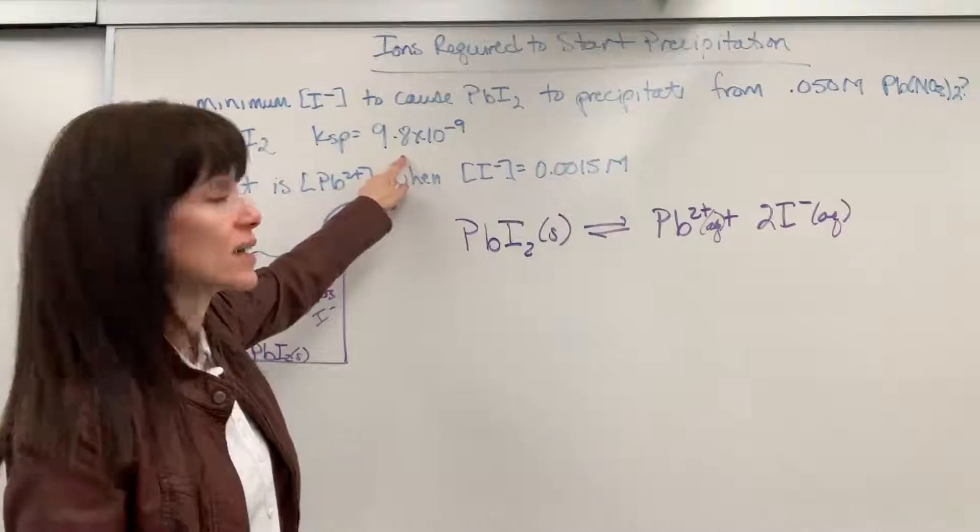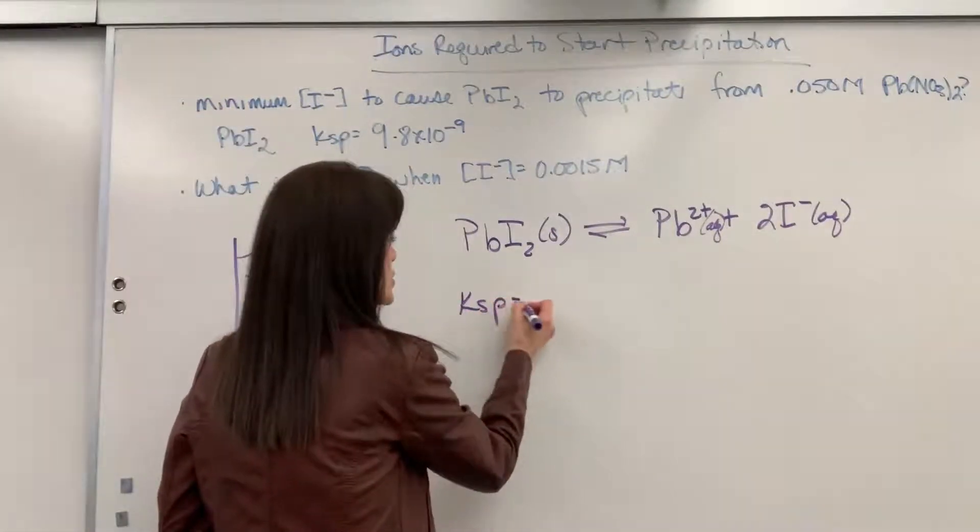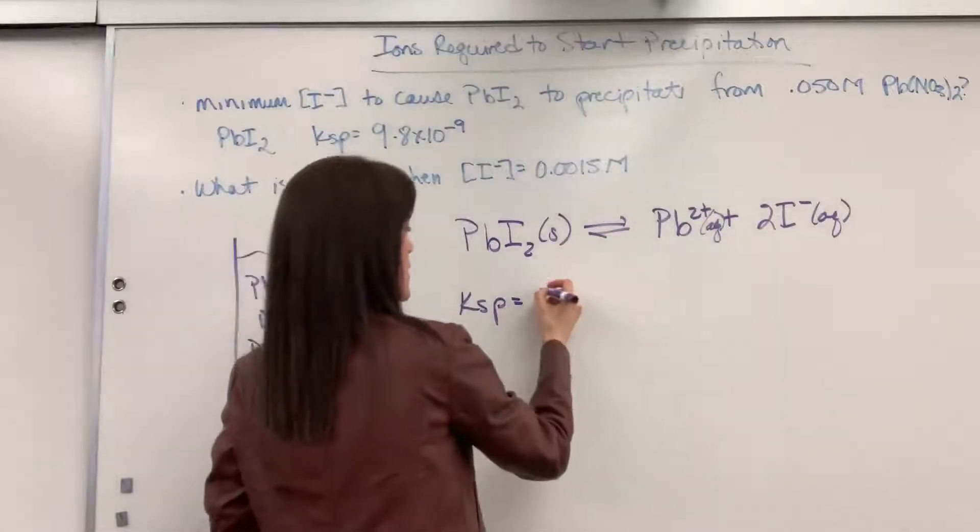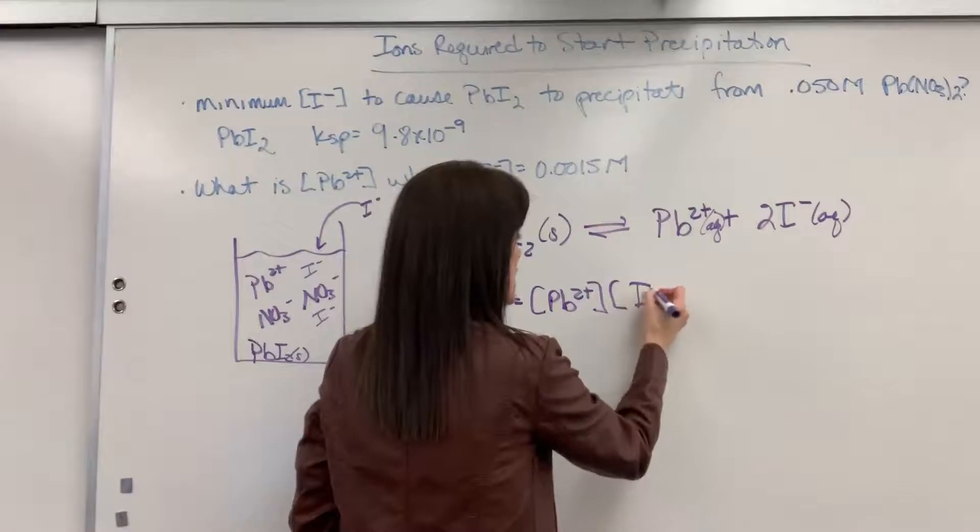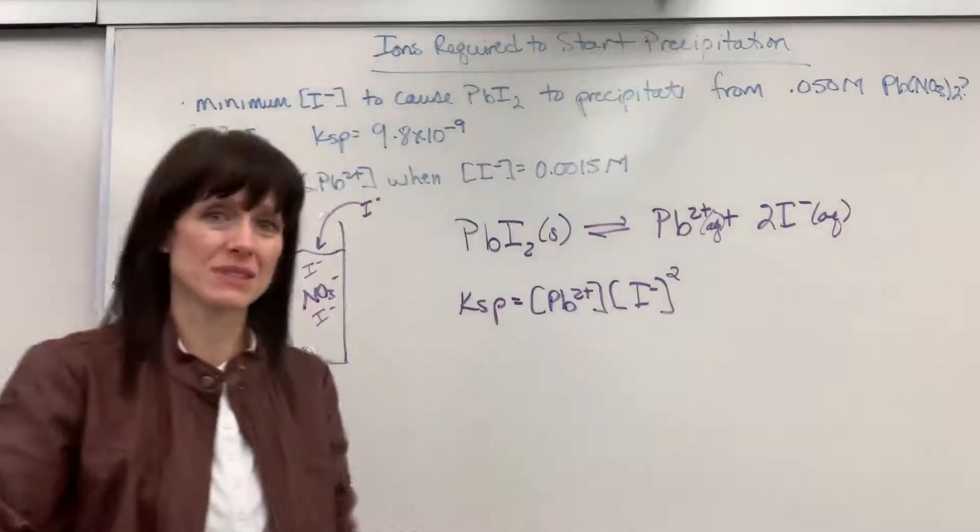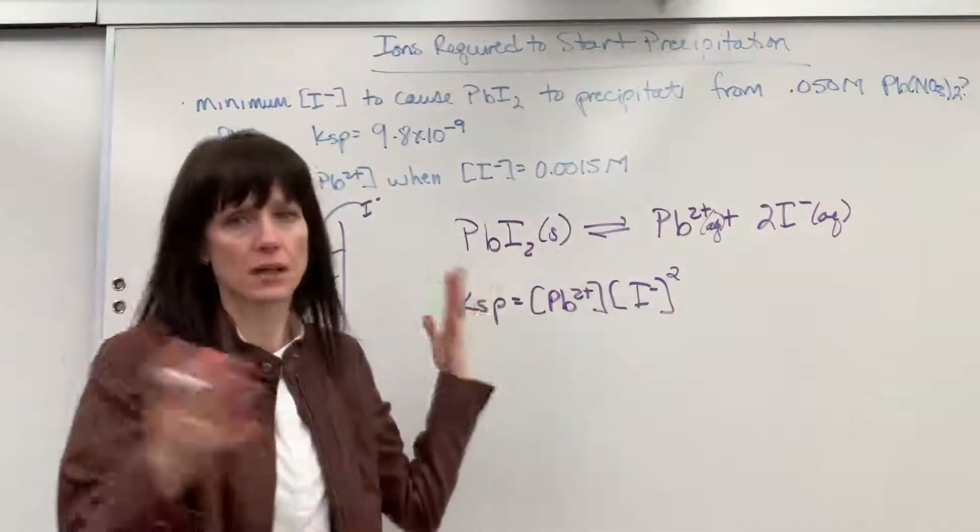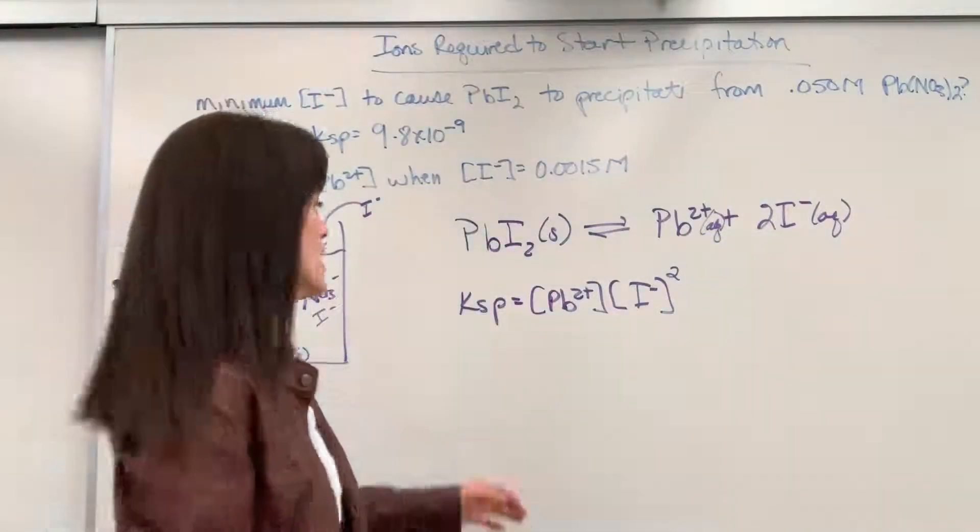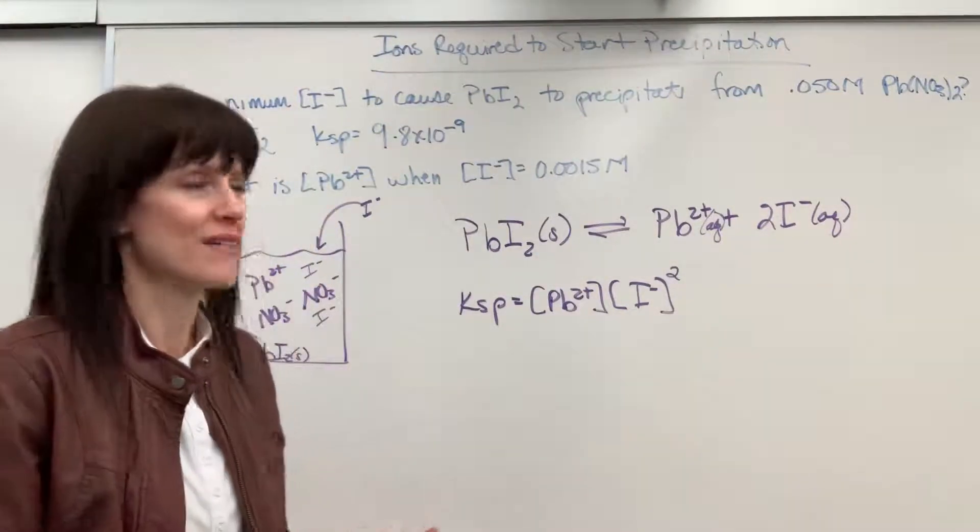Well, the key is right here on KSP. Remember, KSP is just products over reactants. Our products are going to be the lead 2+ ion times that iodide ion. And be really careful, there's a two coefficient, so that two becomes the exponent. So it's squared. Divided by reactants, well, that's a solid. And you know this with KSP, that's just going to be over one since that's a solid.